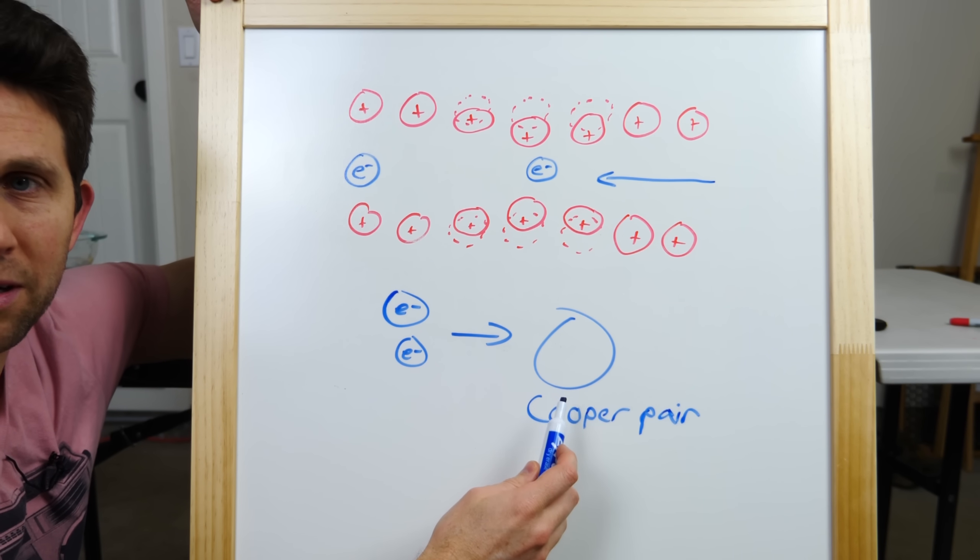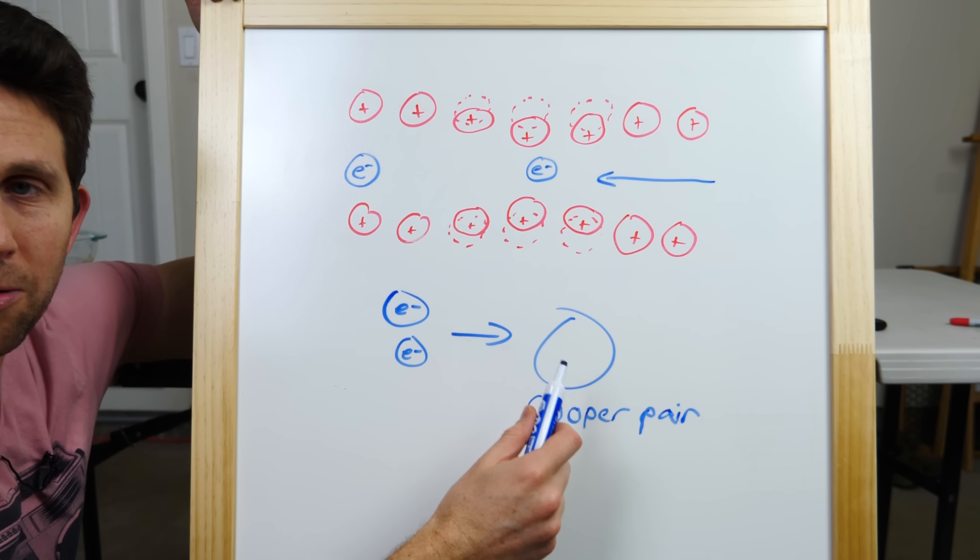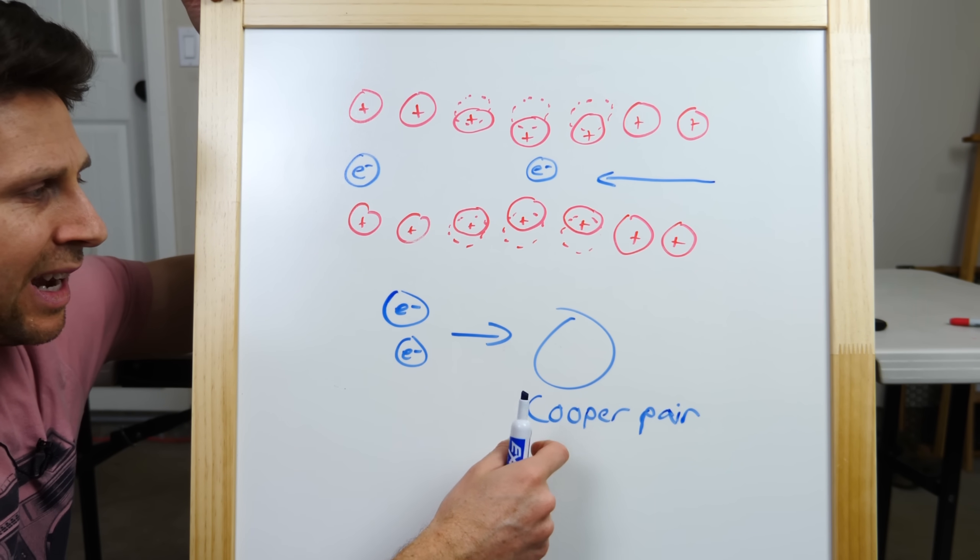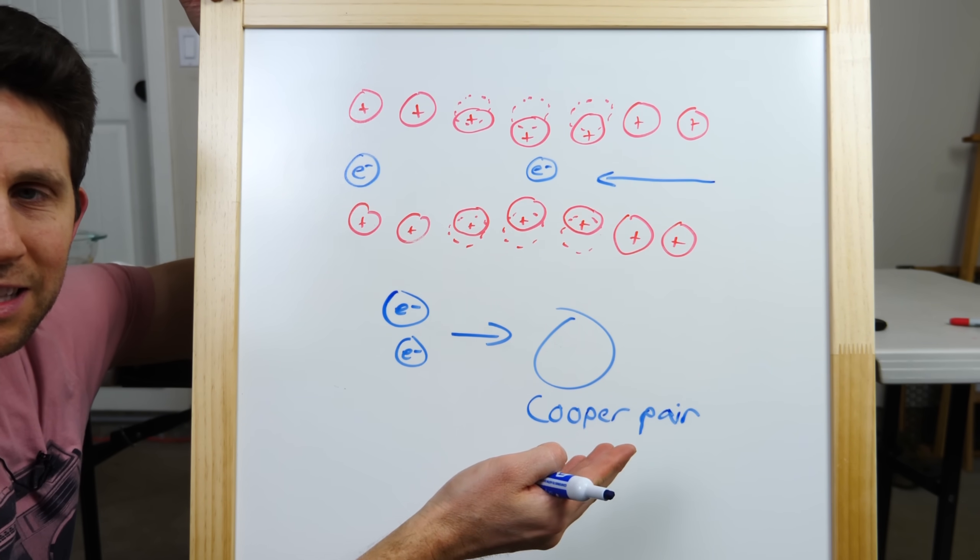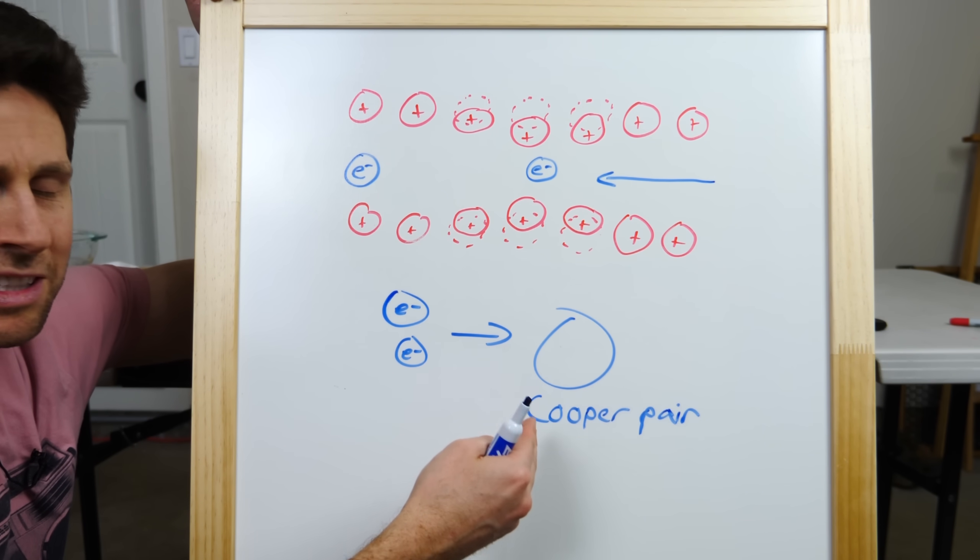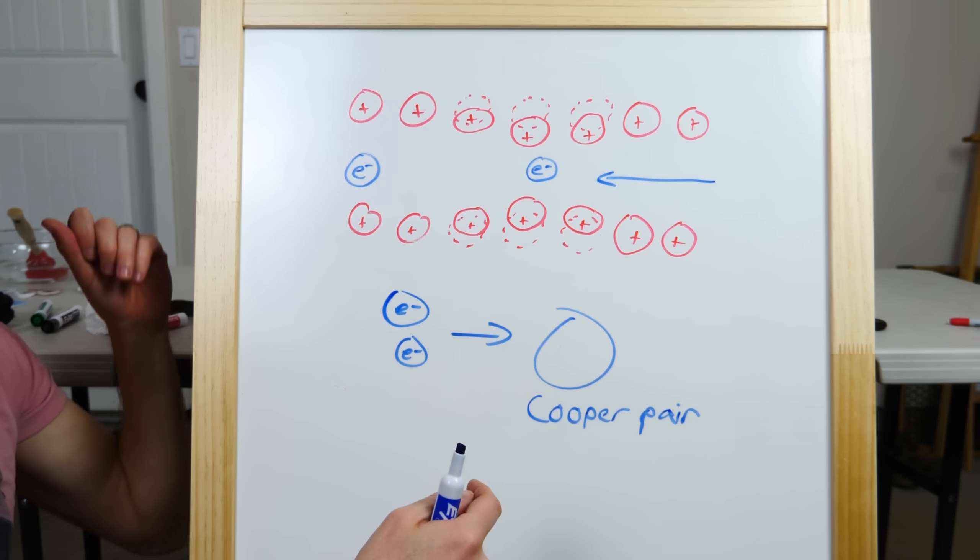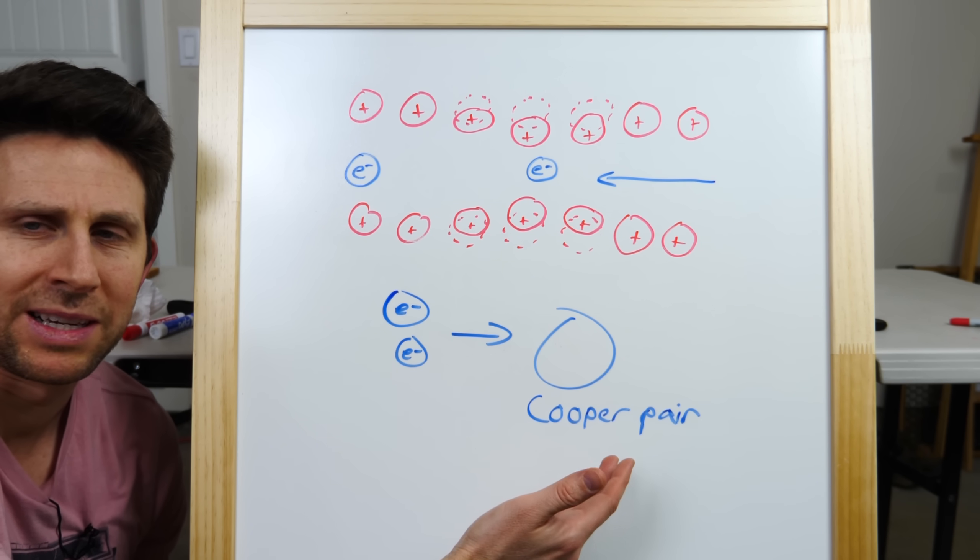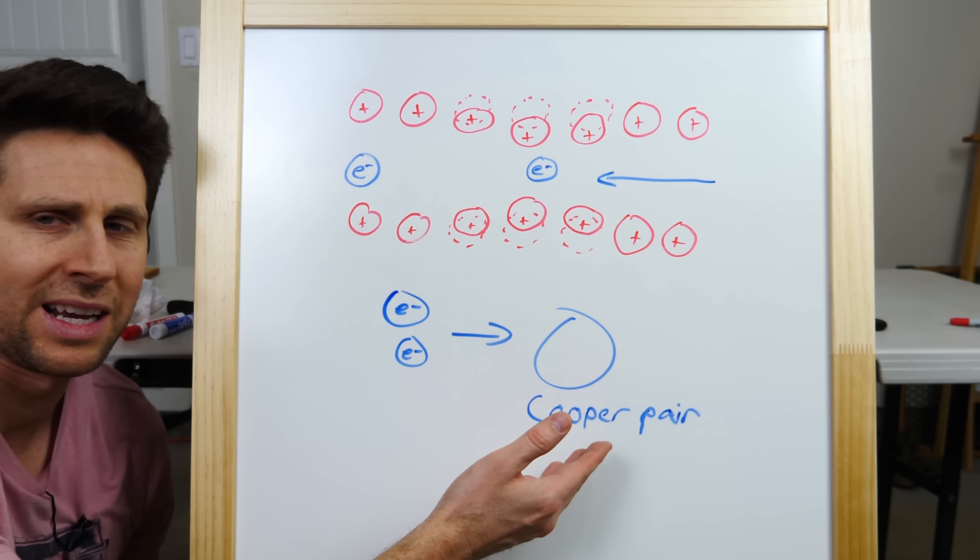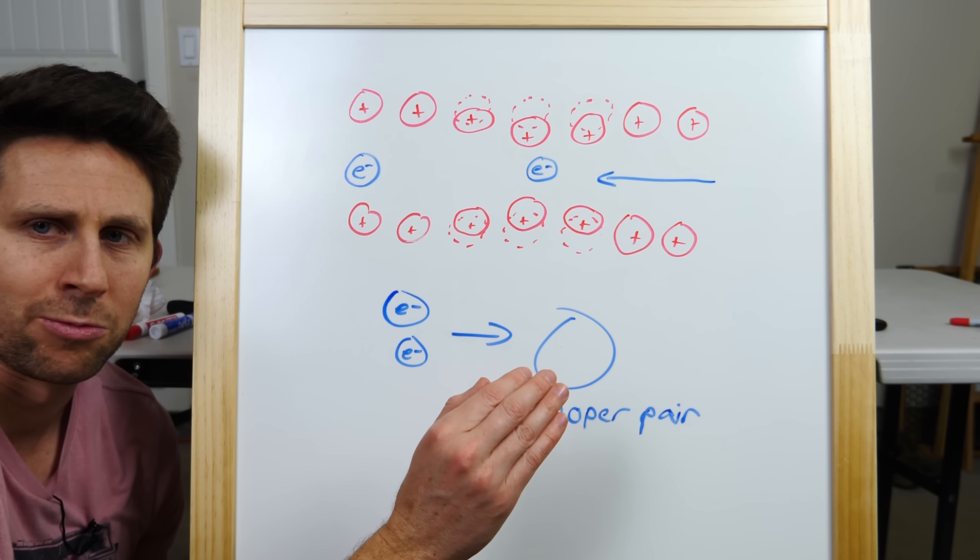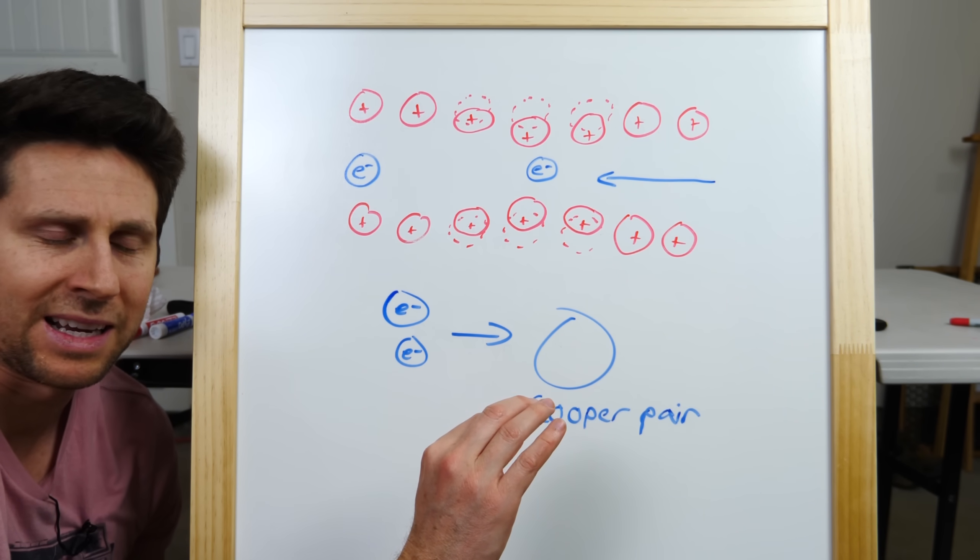Now, this new particle that forms, it's at its lowest quantum state. And in order to excite it to the next level, it needs a certain amount of energy. You can't just give it any amount of energy. It has to get to the next quantum level. This is another quantum effect because it means that you can't give something any amount of energy that you want. It has to come in discrete packets.